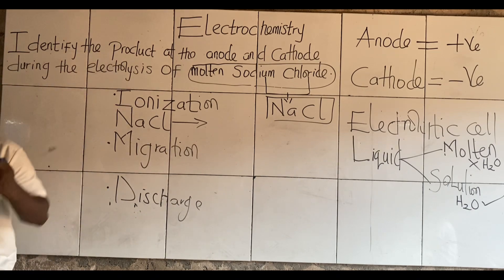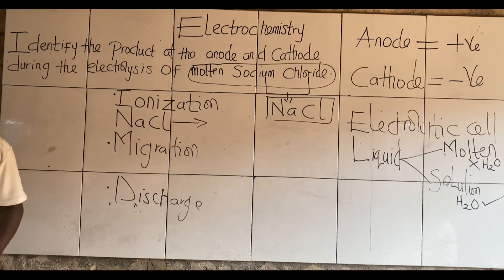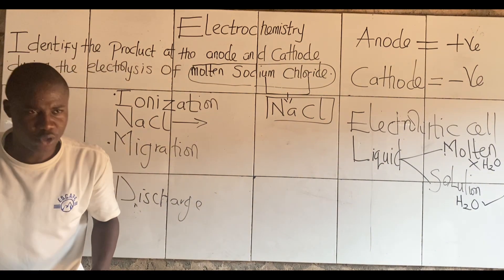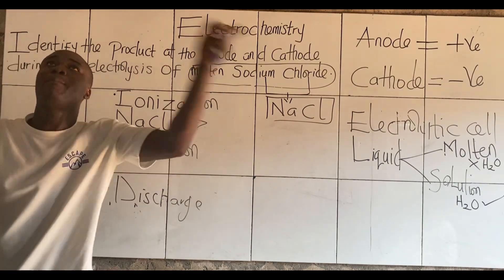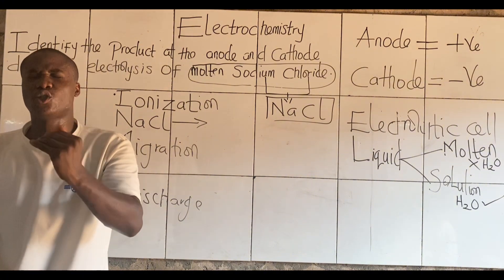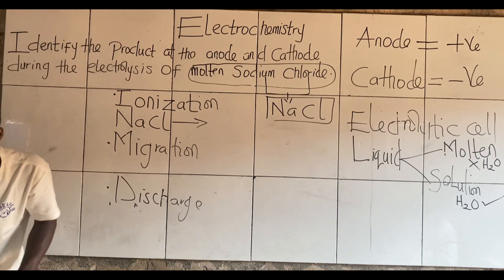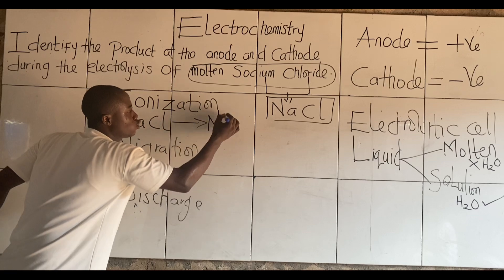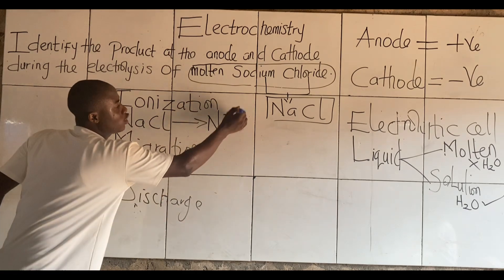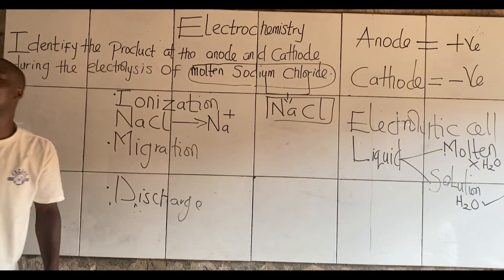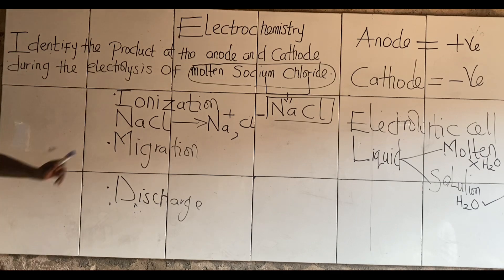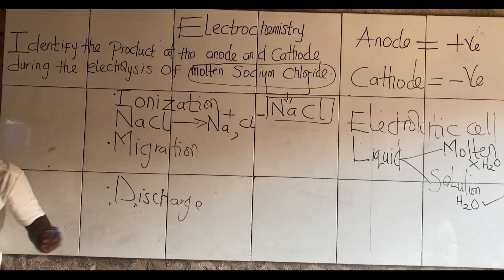Step one is ionization. What are the ions present in this compound NaCl? I have two ions. Ions are charged atoms — they can be either positive or negative. If ions are positive, they should be called cations. If they are negative, they should be called anions. So I can see two ions here. Sodium is a metal, and metals are always positively charged — that is why it is Na+. And there is chloride — Cl-.